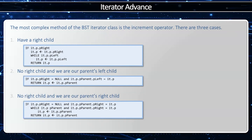Case number two is we have no right child and we are our parent's left child. If that's the case, we just hop up to our parent's node. The final case is we have no right child and we are our parent's right child, in which case we keep going up as long as we're our parent's right child, and then we jig left.